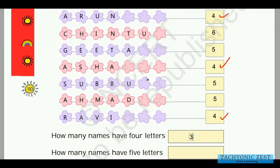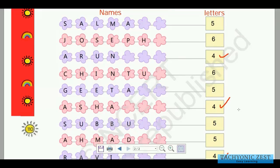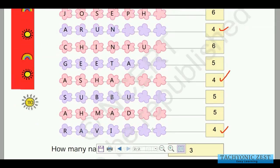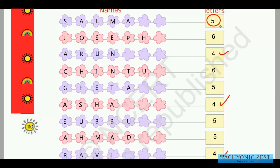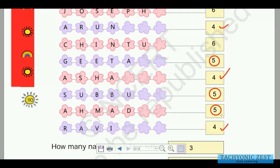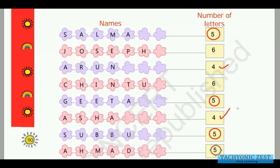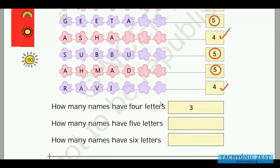Next: how many names have five letters? Let us circle the names that have five letters. Salma has five letters, Gita has five letters, Subbu has five letters, and Ahmad has five letters. Counting them: one, two, three, four — so there are 4 names with five letters. The answer is four.